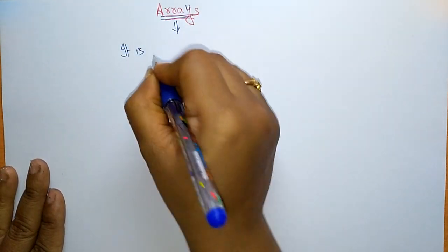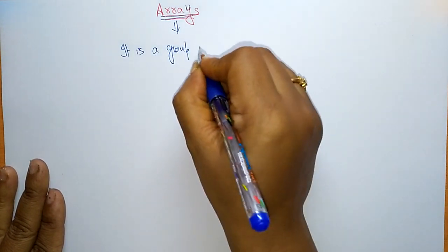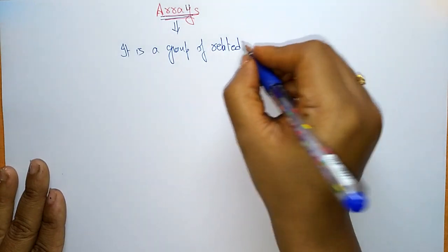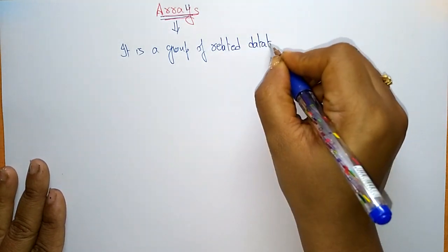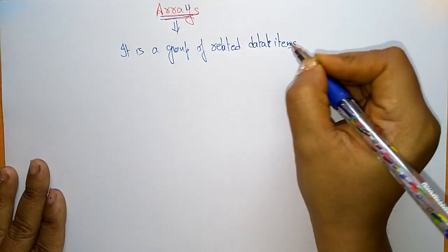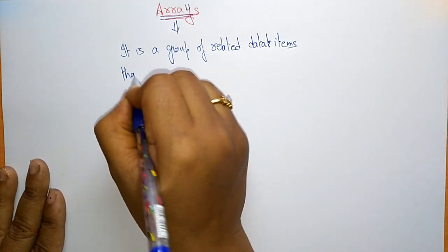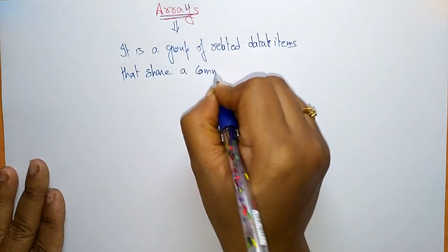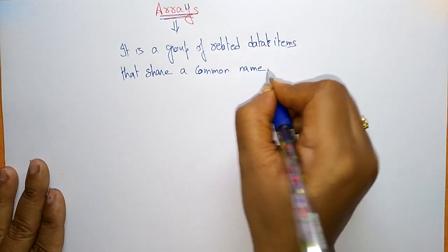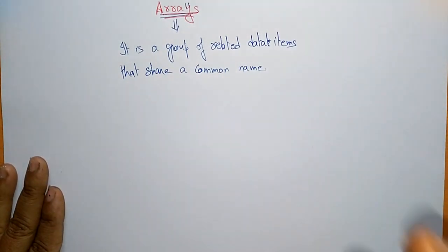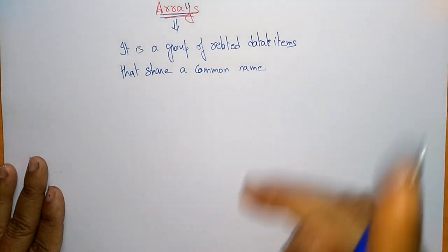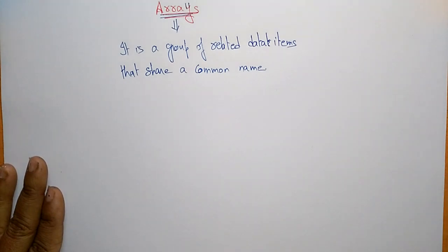An array is nothing but a group of related data items that share a common name. That is the definition of the array. Array is nothing but a group of related data items — some related data items will be there, and those items share a single name. That is what you call an array.